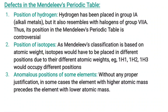Though Mendeleev's periodic table had very good achievements, there were certain defects. One limitation is the position of hydrogen. Mendeleev placed hydrogen in Group 1A along with the alkali metals, but hydrogen also has properties similar to halogens in Group 7A. Since hydrogen shares properties of both alkali metals and halogens, its position in Mendeleev's periodic table is controversial.